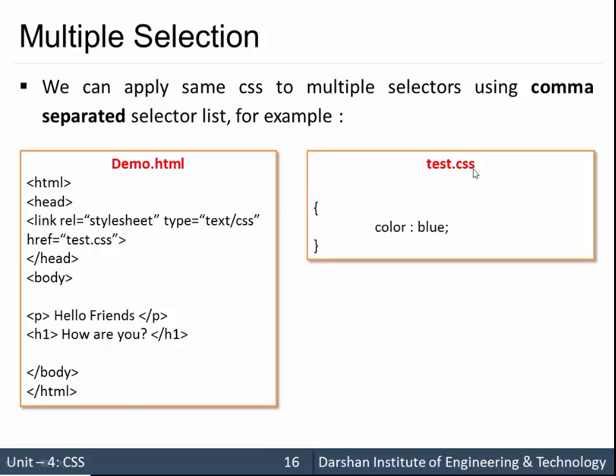I am writing my test.css. I am writing color blue. What I want is the color blue property set for both paragraph as well as h1. So what I need to write in the selector is p comma h1. So comma separated values in a selector will use multiple selection method and apply color to both p as well as h1.